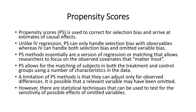Propensity scores are used to correct for selection bias. Unlike IV regression, propensity scores can only handle selection bias with observable characteristics, whereas IV can handle both selection bias and omitted variable bias — that's the strength of IV regression. Of course, handling instrumental variables regression can be a little tricky, and you must have the right instrument; meeting those assumptions can be quite onerous. But propensity score methods are essentially a version of regression or matching that allows researchers to focus on the observed covariates that matter most, and there are various types — greedy matching, optimal matching, simple regression estimates, and doubly robust estimators.